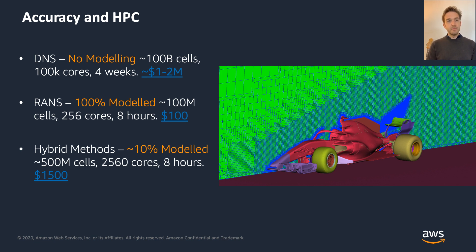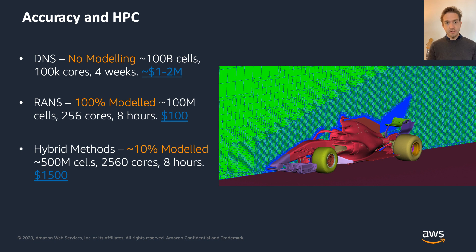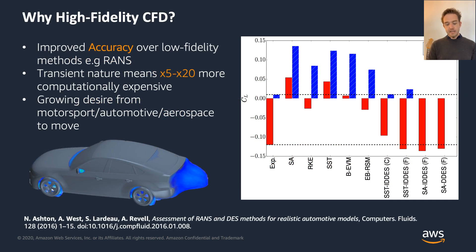Today's focus is on something between those two extremes — hybrid methods — where we resolve some of the flow and retain some modelling. That means roughly 500 million cells, and because turbulence is inherently transient the simulation is also transient. Running on about ten times more cores than RANS, perhaps around eight hours, the cost rises from around $100 to around $1,500. But the accuracy is better.